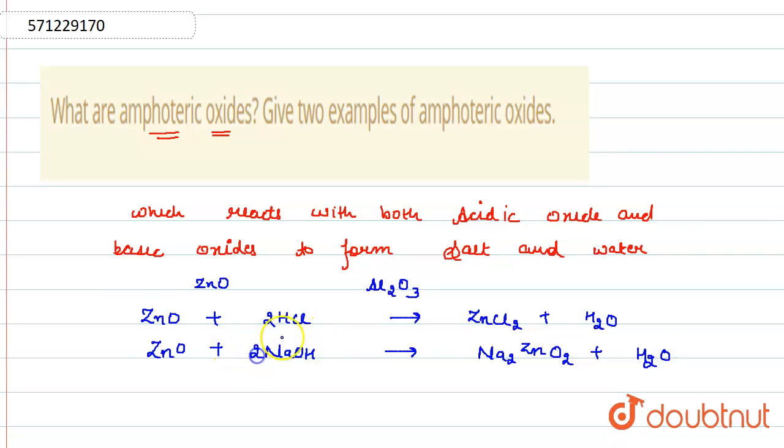So according to this, zinc oxide reacts with HCl, which is a strong acid, to form zinc chloride, and zinc oxide reacts with sodium hydroxide, which is a strong base, to form Na2ZnO2.